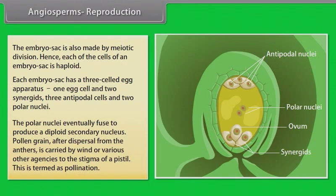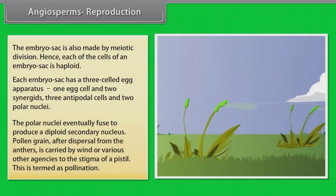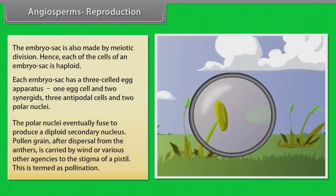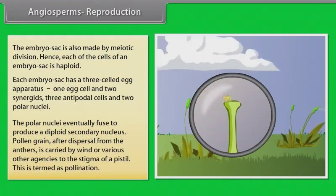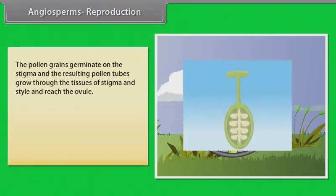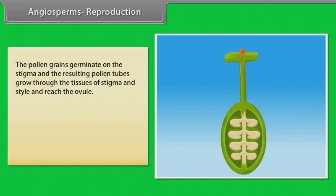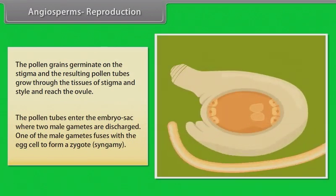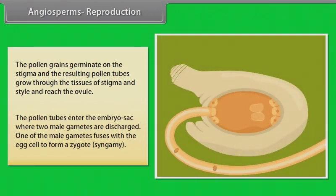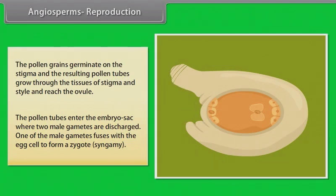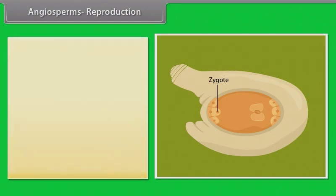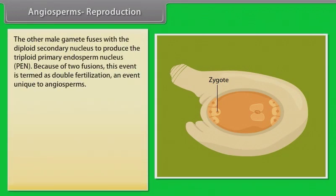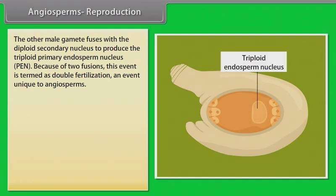The polar nuclei eventually fuse to produce a diploid secondary nucleus. Pollen grain after dispersal from the anthers is carried by wind or various other agencies to the stigma of a pistil. This is termed as pollination. The pollen grains germinate on the stigma and the resulting pollen tubes grow through the tissues of stigma and style and reach the ovule. The pollen tubes enter the embryo sac where two male gametes are discharged. One of the male gametes fuses with the egg cell to form a zygote. The other male gamete fuses with the diploid secondary nucleus to produce the triploid primary endosperm nucleus PEN. Because of two fusions, this event is termed as double fertilization, an event unique to angiosperms.